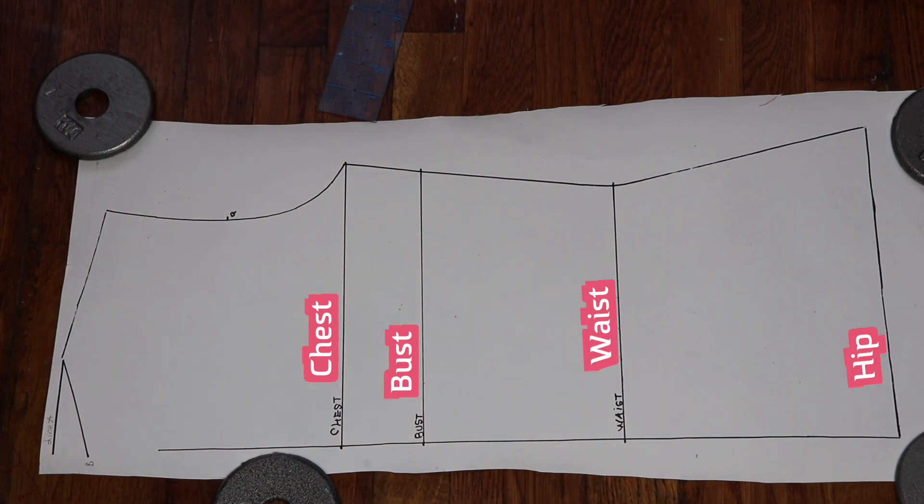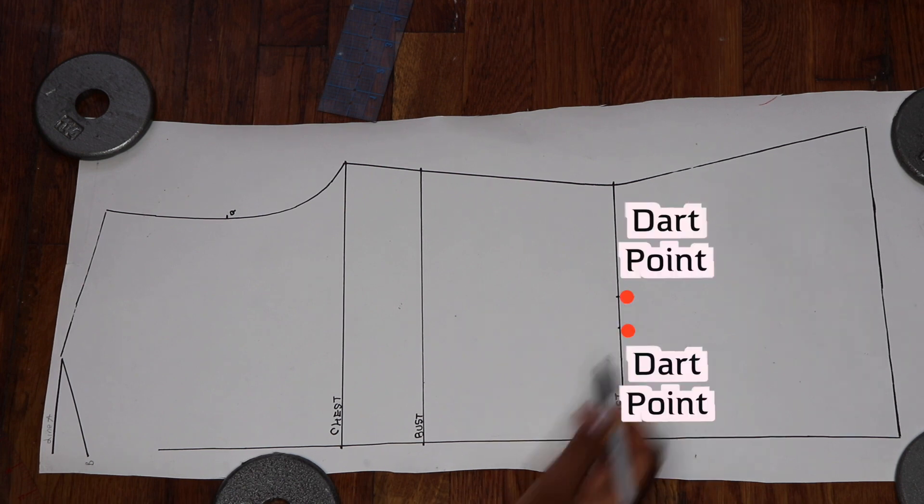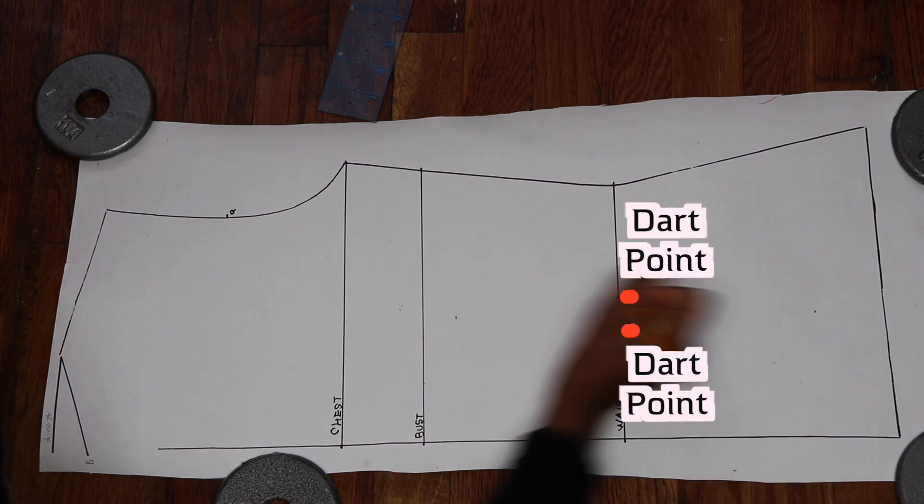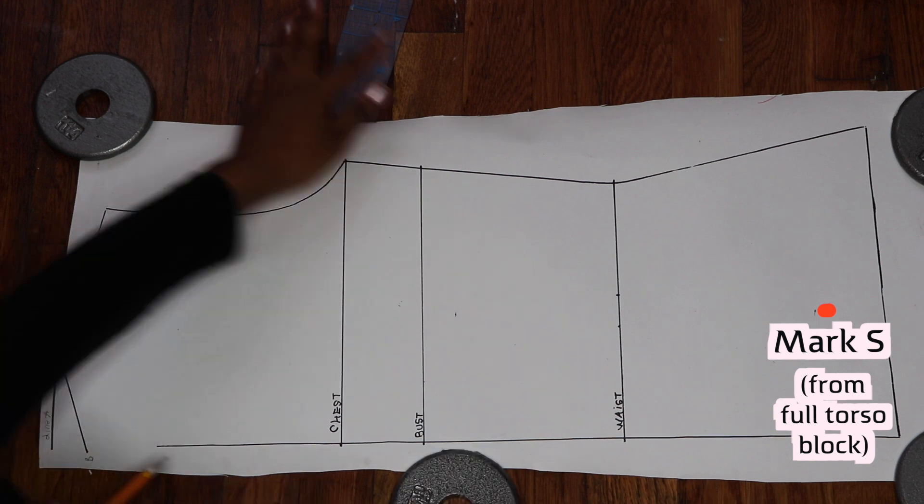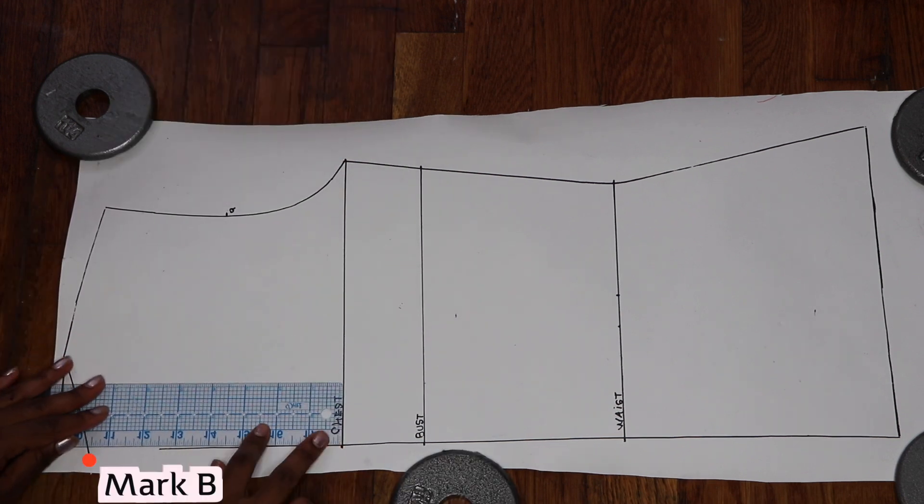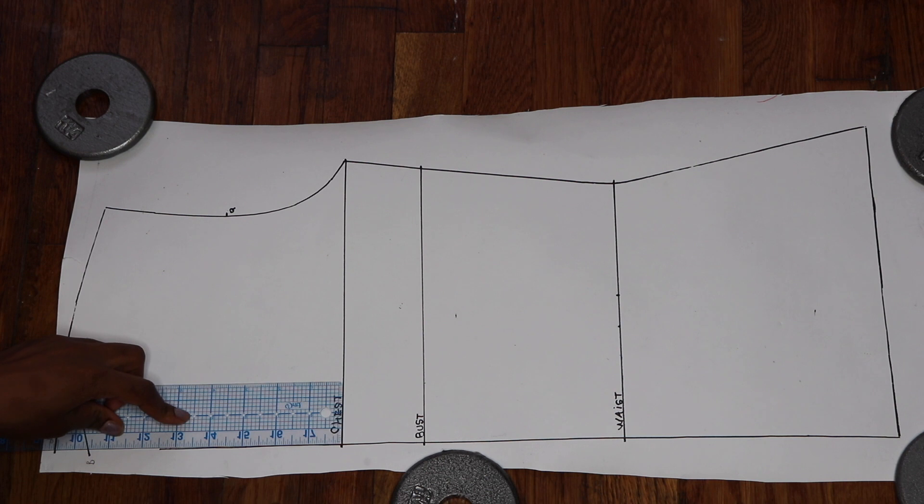And then I am transferring the dart points as well as mark S. So we just want to close up this gap by drawing a vertical line that connects mark B to the place where we stopped tracing the front full torso block.